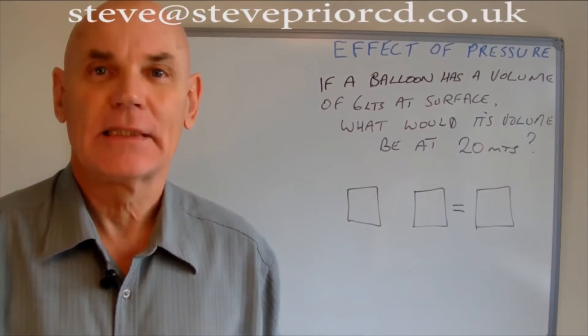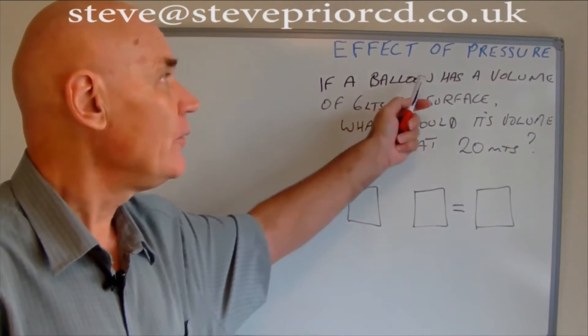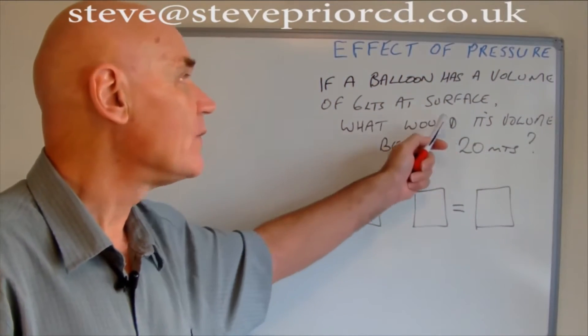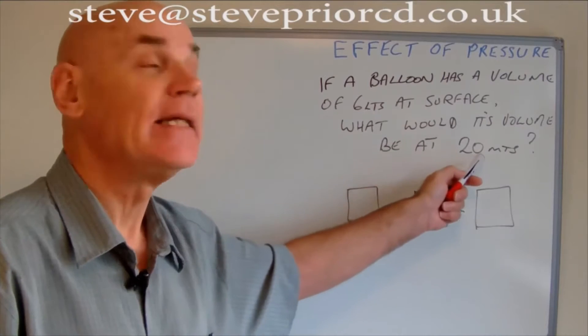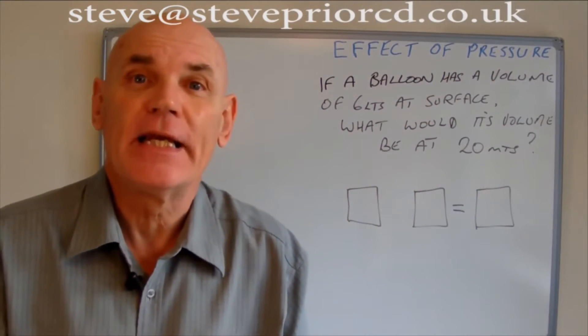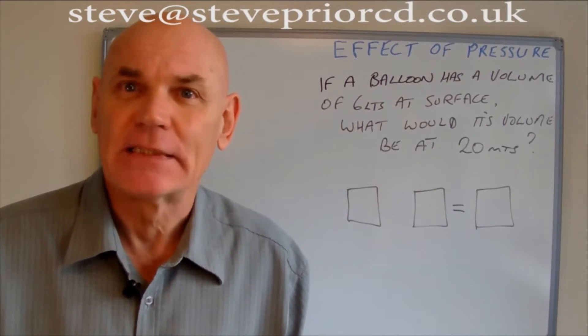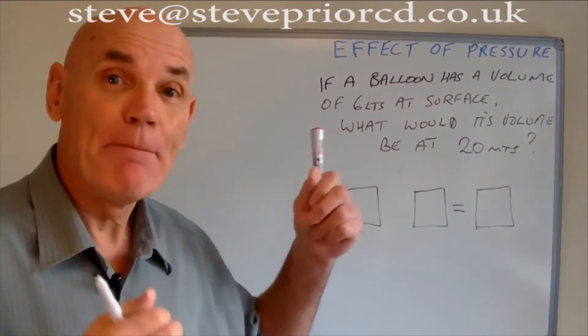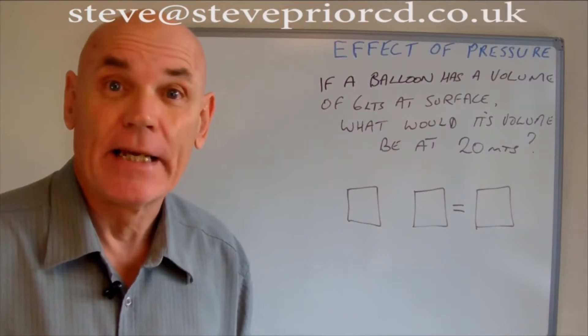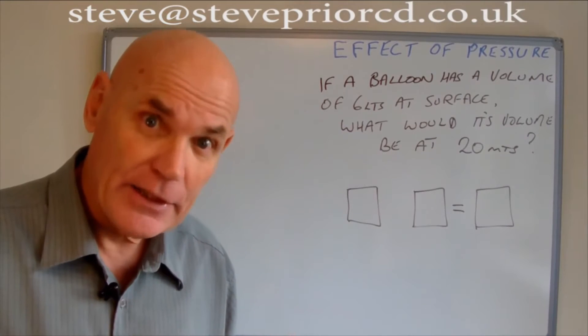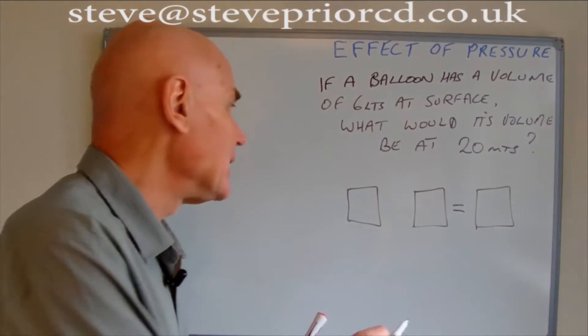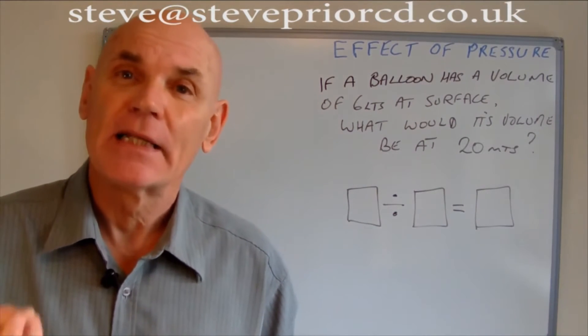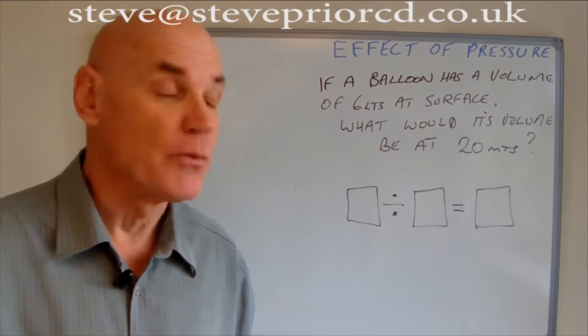Here is a typical question: if a balloon has a volume of six liters at the surface, what would its volume be at 20 meters? Now the first thing I urge you to do is get away from mathematics and just think about something you do know about. Will the balloon get bigger or smaller as you take it down? This is the crucial thing. I think you'll know that it gets smaller, and the mathematical sign for smaller is division.